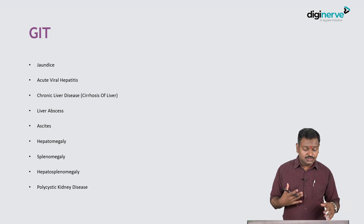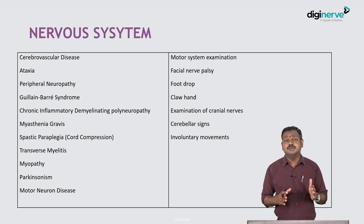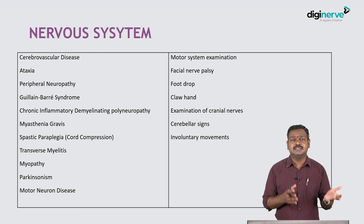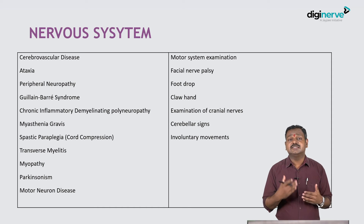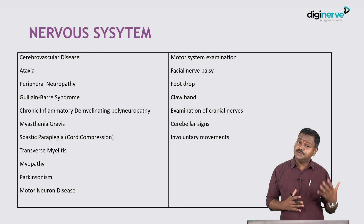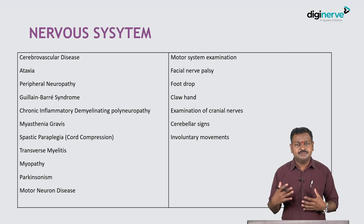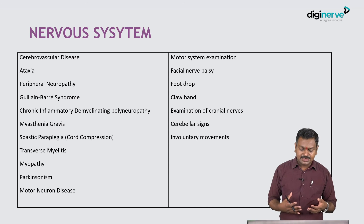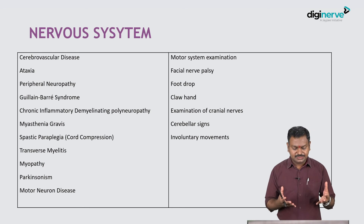GIT is by far the easiest system - the number of diseases is relatively small. Cases include jaundice, liver abscess, chronic liver disease, hepatomegaly, splenomegaly, and sometimes a palpable kidney. Findings are obvious and clinical signs are straightforward. The nervous system is by far the most systematic - one plus one always equals two. Signs are clear: an extensor plantar is an extensor plantar; an exaggerated reflex is exaggerated. Localization is straightforward with no ambiguity. Cases include stroke, peripheral neuropathy, ataxia, demyelinating diseases, Parkinson's disease, spinal cord disease, facial nerve palsy, foot drop, and claw hand.